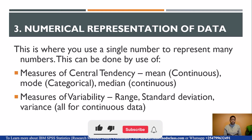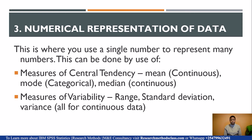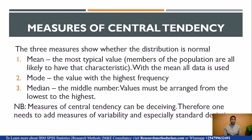Then we have numerical representation of data, where you use a single number to represent many numbers. We have two types of numerical representation under descriptive statistics: measures of central tendency and measures of variability. With measures of central tendency, mean is for continuous data, mode is for categorical data, and median is for continuous data. For measures of variability — range, standard deviation, and variance — these are all for continuous data.